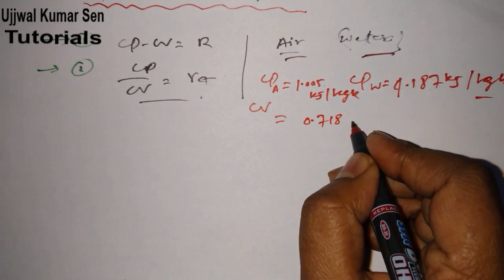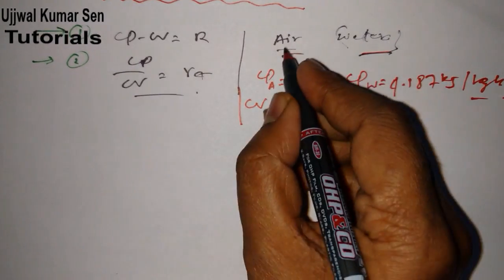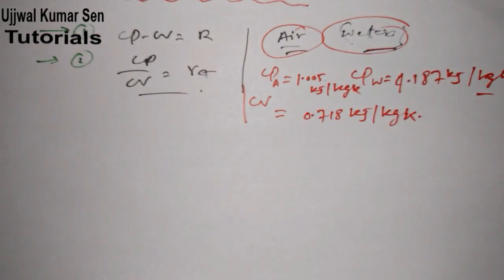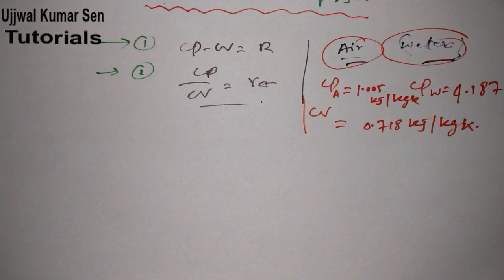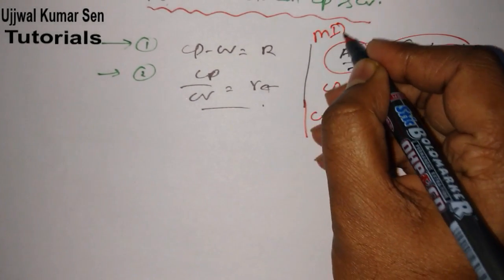CV for air is 0.718 kilojoule per kg Kelvin. All right, so these are two things for air and for water we got CP and CV values. These values are most important if you are preparing for examination from numerical point of view especially.